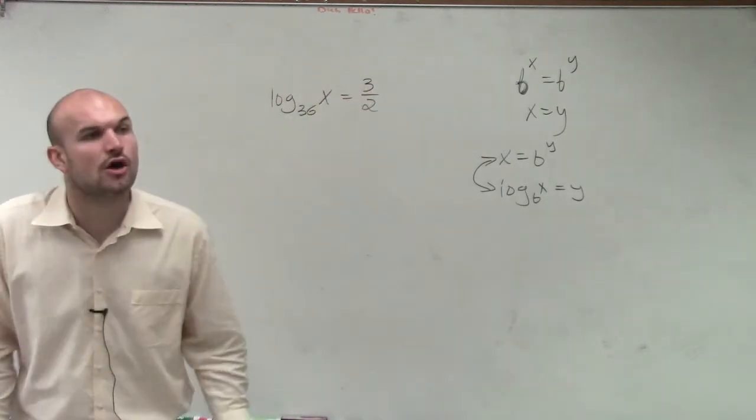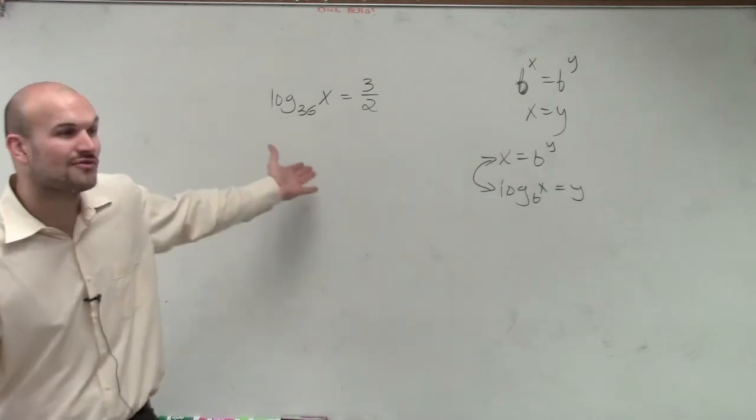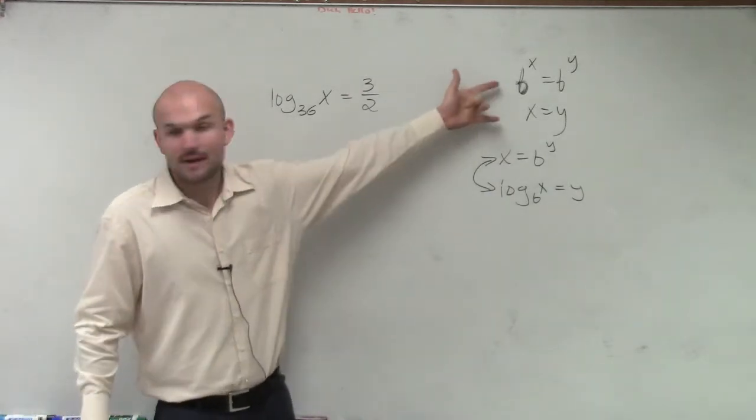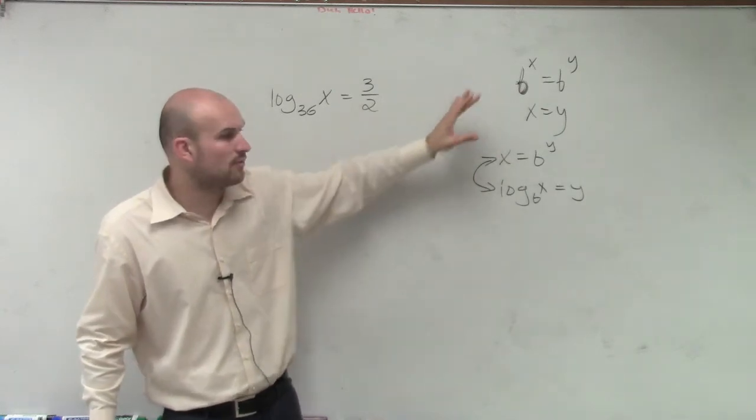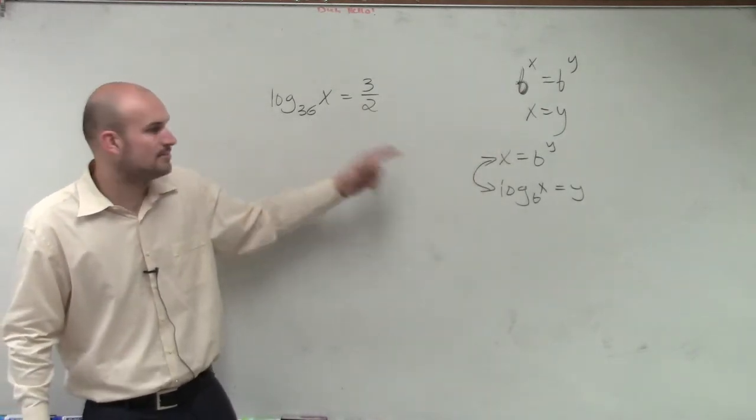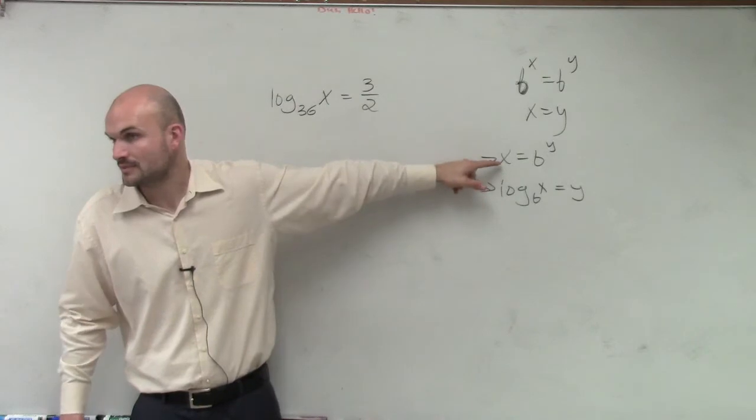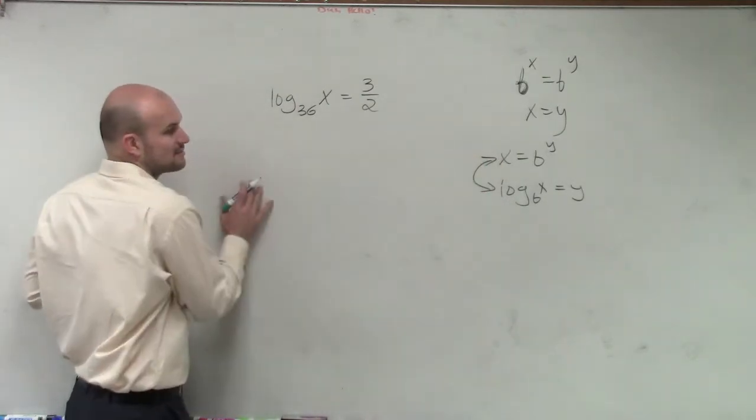So now what I want you to do is I want you to solve for x. So now we've got to solve for x. Well, this property right now is not really going to help us out. However, let's go and take a look at what about if I rewrote my logarithm as an exponential. So therefore, if I rewrote as an exponential form, I'd have 36.